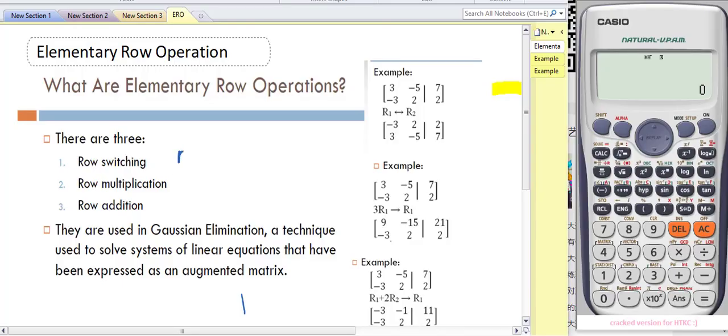Hi, what are elementary row operations? There are three. The first one is row switching or interchange. The second is row multiplication, multiplying the row with a constant alpha, where alpha cannot be zero. The last one is row addition, like the properties of determinant, alpha Rj plus Ri, used to get zeros during the ERO process.